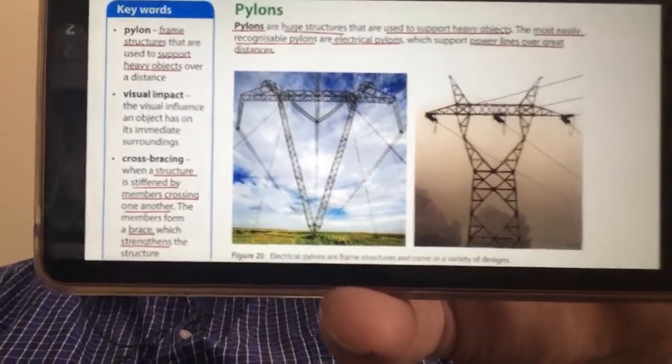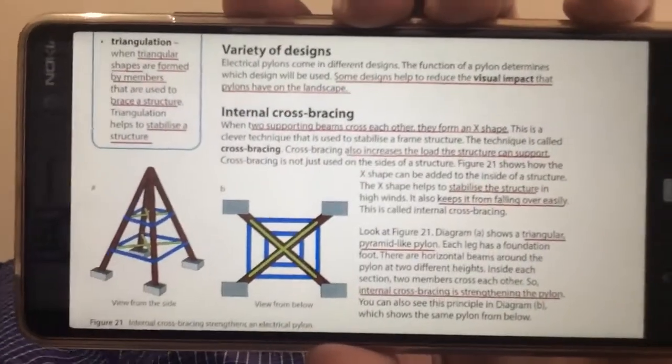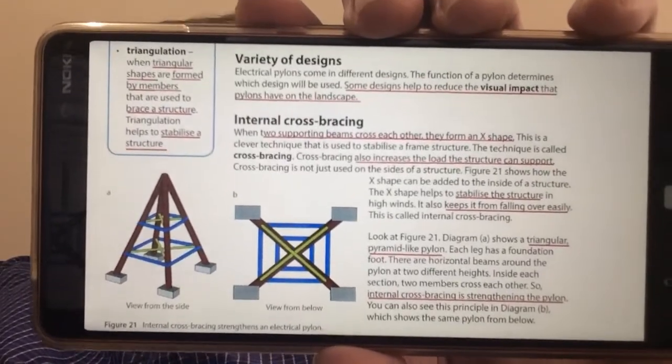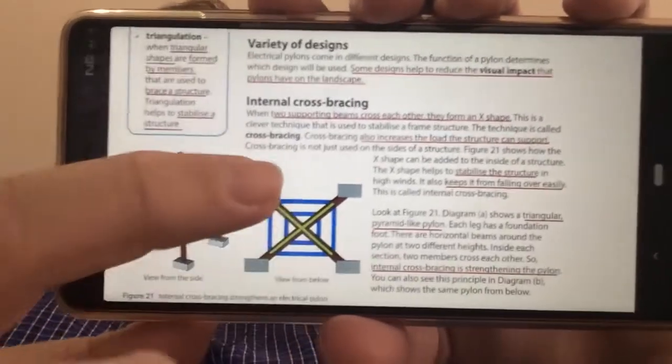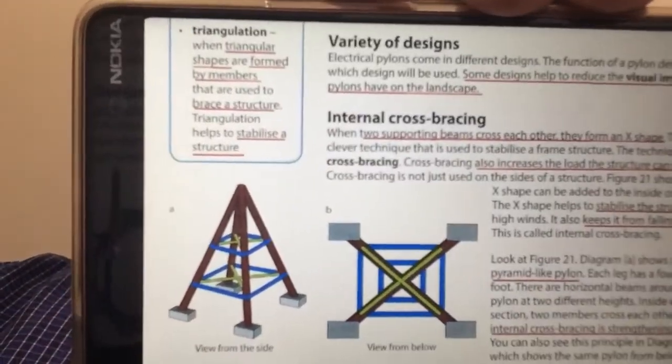Okay, fantastic. And then we can have a quick look on the next little bit here. Another way to keep your pylons very strong and rigid is something called triangulation.